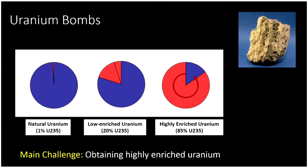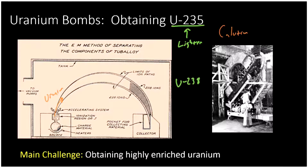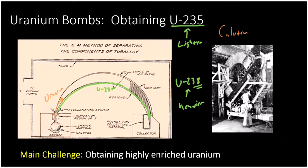The old-school way to enrich uranium was with something called a calutron. Uranium is shot out, and because U-235 is slightly lighter than U-238 — differing by just three neutrons — they can be separated. When shot into a region with a magnetic field along a curved path, the lighter U-235 tends to travel on the inner track while the heavier U-238 goes on the outer track. This is a very slow way to separate U-235 from U-238, but you end up collecting the U-235.